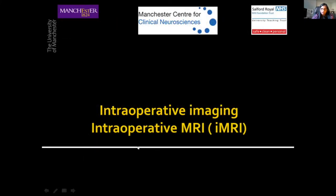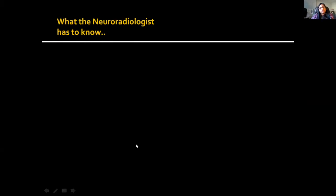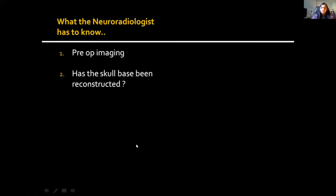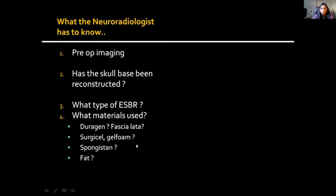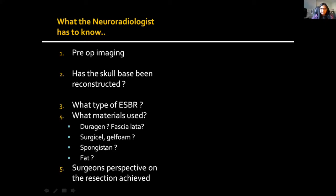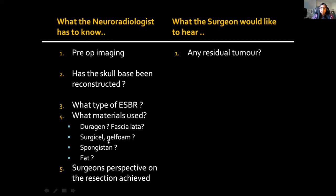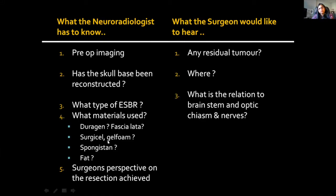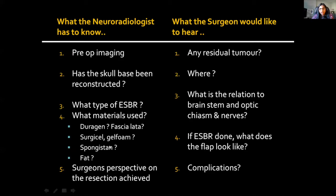Moving to intraoperative MRI: when reading an intraoperative MRI, we really need to know what the pre-op imaging looks like, and it always helps to have a chat with the surgeon before surgery. The neuroradiologist also needs to know whether the skull base has been reconstructed and, if so, what type and materials were used, because imaging appearances vary depending on the materials. Finally, we need to know the surgeon's perspective on the resection achieved. The surgeon wants to know if there is residual tumour, where it is, its relationship to the brain stem and optic chiasm, and — if skull base reconstruction has been done — what the flap looks like and what the complications are.